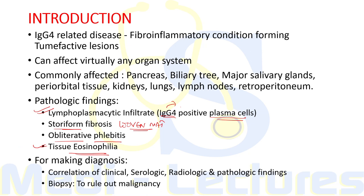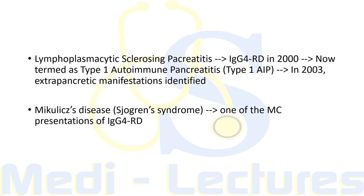Mild to moderate tissue eosinophilia is also seen. Although the pathology is consistent from organ to organ, it is never diagnostic alone. For making the diagnosis, correlation of clinical, serological, radiologic, and pathologic findings should be done. Biopsy is usually not required as such for making the diagnosis, but it is performed to rule out any malignancy if present.